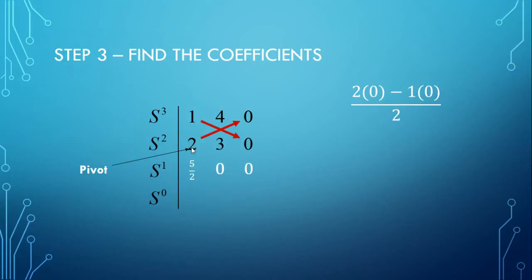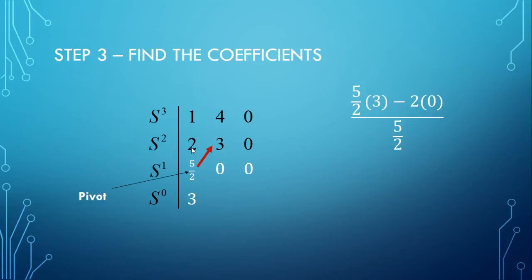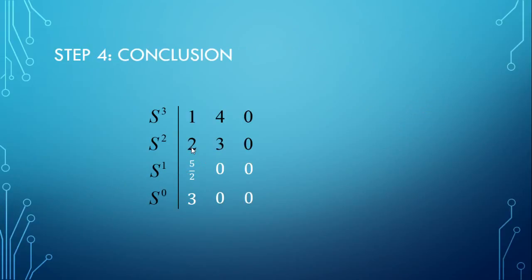Next step, you need to find the coefficient of S to the 0. In this case, we're going to move down the pivot to 5 over 2. Do the same cross multiplication. I've written it out on the other side, should you wish to refer to it. And you see that cancels down to give you 3. So last thing, you add in the two 0s. And you can make your conclusion.